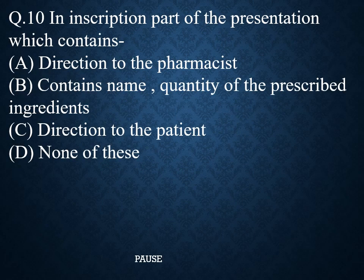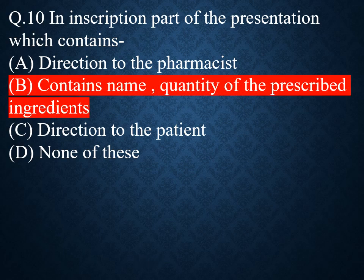Question 10. In the inscription part of the prescription, which contains. Option A: Direction to the pharmacist. Option B: Contains name and quantity of the prescribed ingredients. Option C: The direction to the patient. Option D: None of these. And the right answer is: Contains name and quantity of the prescribed ingredients. The inscription part is the main part of the prescription.